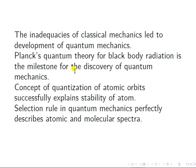These are the inadequacies we discussed. Black body radiation and Planck's quantum theory, which was a milestone for the discovery of quantum mechanics around 1900, Bohr's theory with angular momentum mvr = nh/2π — the quantization of angular momentum — are all very important. Selection rules in quantum mechanics also perfectly describe atomic and molecular spectra.